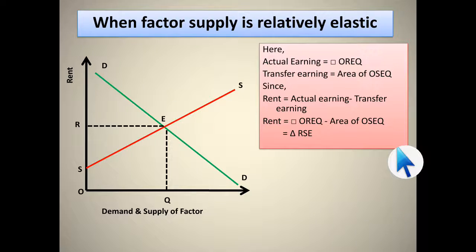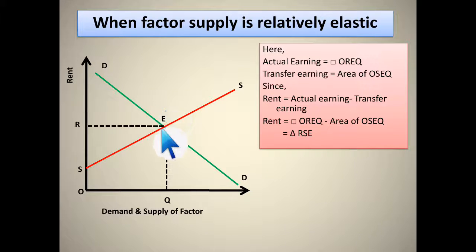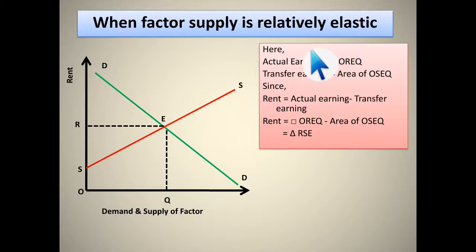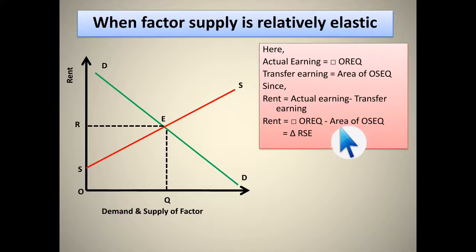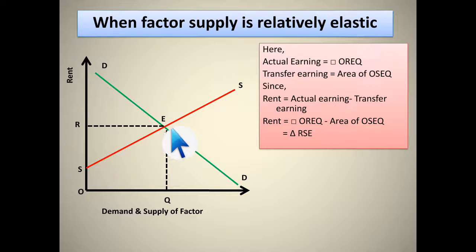The normal case is when factor supply is relatively elastic. At point E the demand and supply curve intersect, giving the rent value R. Here, actual earning is O-R-E-Q and transfer earning is the area O-S-E-Q — the amount needed to make the farmer sustain in business. So the rent equals O-R-E-Q minus O-S-E-Q, which gives triangle R-S-E. This triangle is the amount of economic rent the farmer needs to pay. Remember this concept for answering multiple choice questions in your competitive exam.